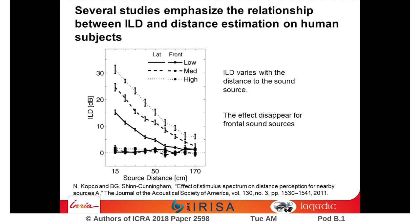Several studies showed a relationship between the ILD value and the sound distance perception in human subjects. The ILD varies with the sound distance only for eccentric sound sources. This effect is not observed when the sound source is in the auditory fovea.